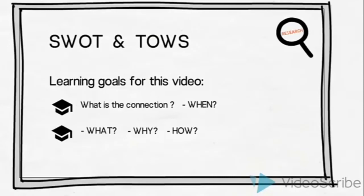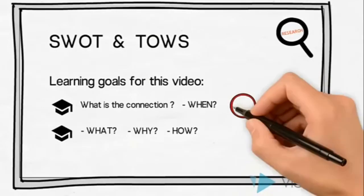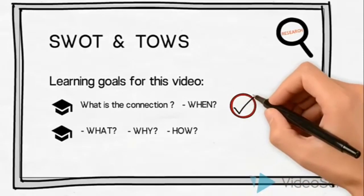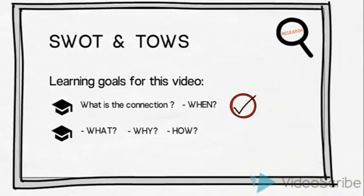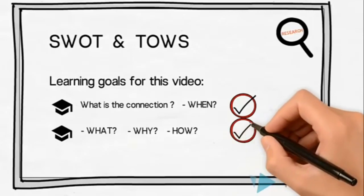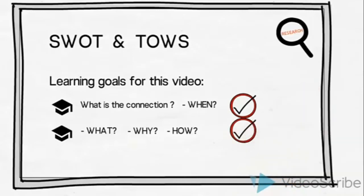We have now established a connection by showing when the SWOT and TAOS are used in a research, analysis and strategic planning process. And by using an example, we have illustrated what a SWOT and a TAOS is and why they are useful tools. And ultimately, we have shown how we can go about conducting a useful SWOT and TAOS.